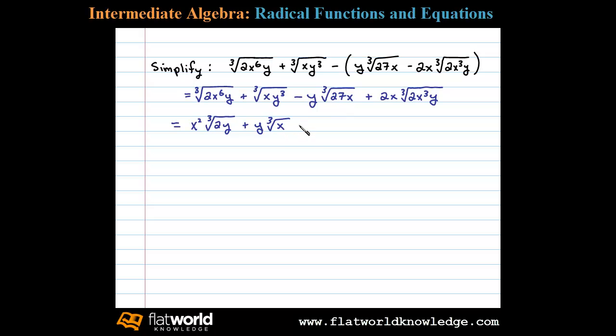...is a perfect cube, so we'll be left with a term here minus 3y cubed root of x. The cubed root of 27 is 3, and then plus the cubed root of x cubed is x, but we already had an x out there, so we'll write 2x squared times the cubed root of 2y.